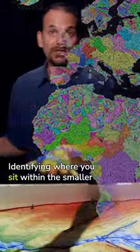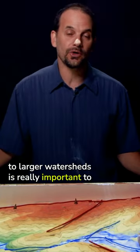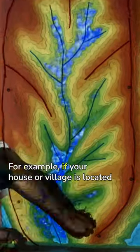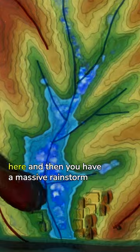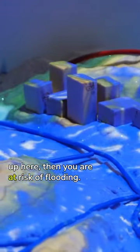Identifying where you sit within the smaller to larger watersheds is really important to understanding the forces at work and that you ultimately want to plan for. For example, if your house or village is located here and then you have a massive rainstorm up here, then you're at risk of flooding.